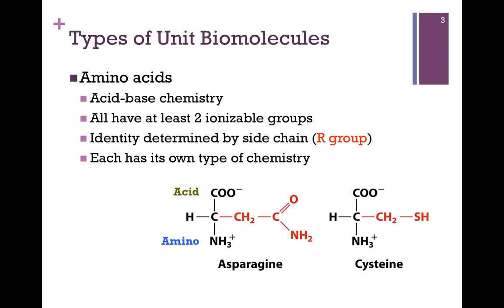The first class of biological molecules we'll consider includes the amino acids. Looking at the structural formula for the amino acids at the bottom of the slide, we can see that this type of molecule is aptly named. It contains both an amino group, NH3+, and a carboxylic acid group, COO-, both bound to a central carbon atom. Because of the presence of these two groups, each amino acid has both acid and base properties and carries at least these two ionizable groups.